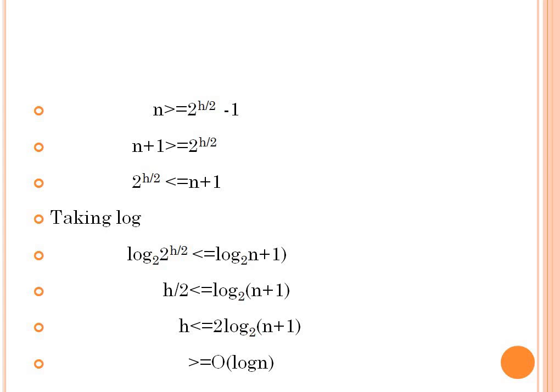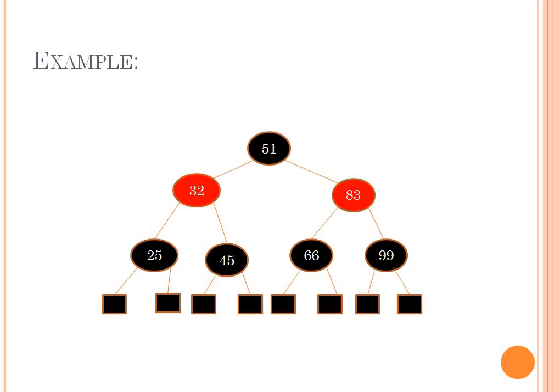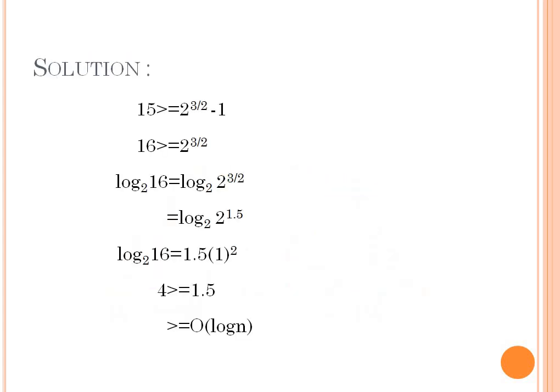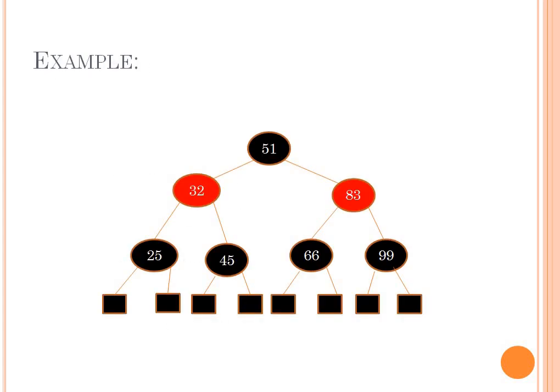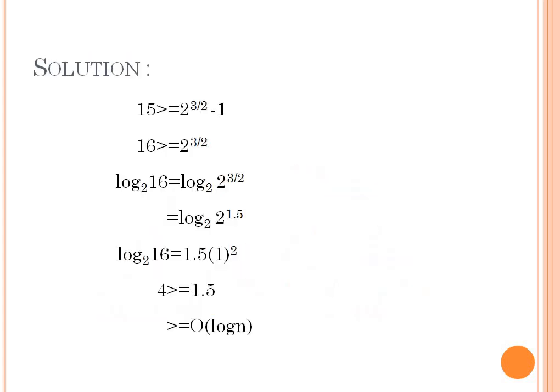Let's solve this with an example. This is a red-black tree with the root as black — the root node is always black in a red-black tree. Black nodes have two red children, and when a parent is red the children should always be black. Here we are taking all leaf nodes as black.